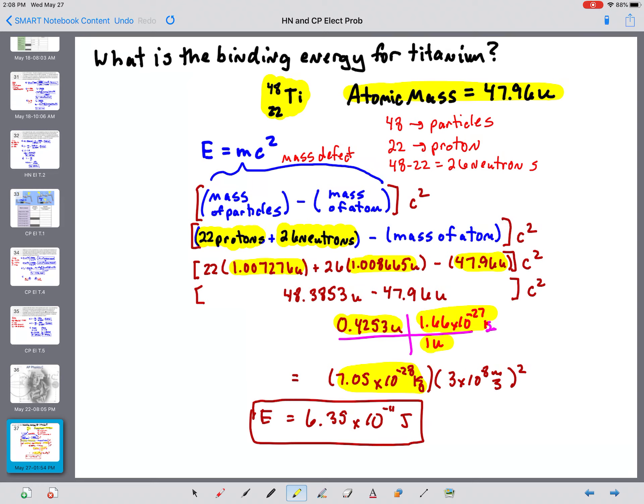So rest energy is using the entire mass of the object in E equals mc squared, making sure that mass is in kilograms. Binding energy is using for the mass, the difference of the mass of the separate particles, subtracting the mass of the atom in E equals mc squared.